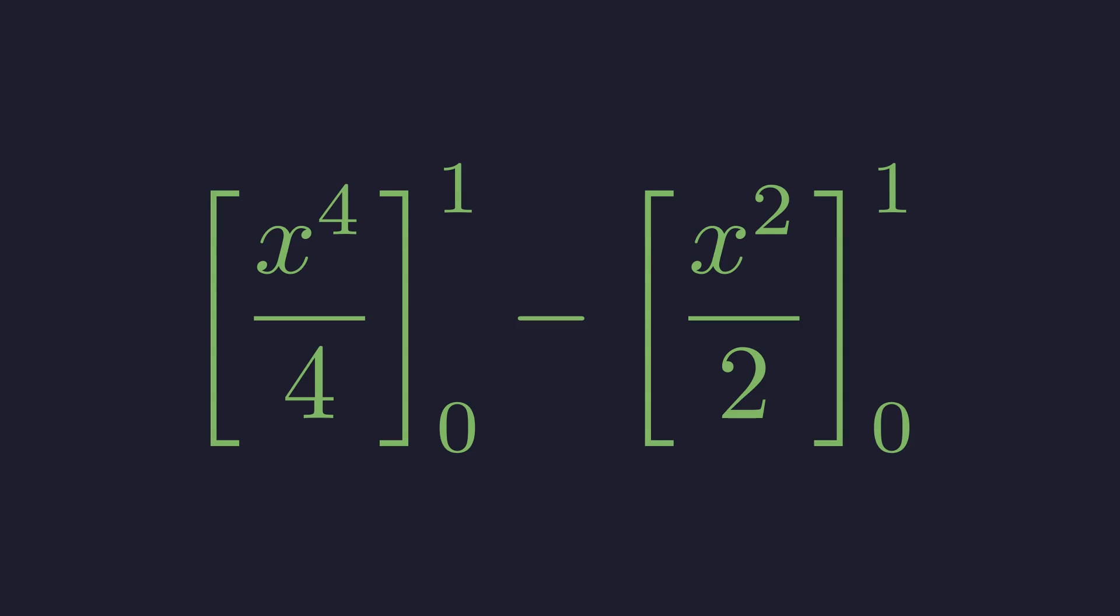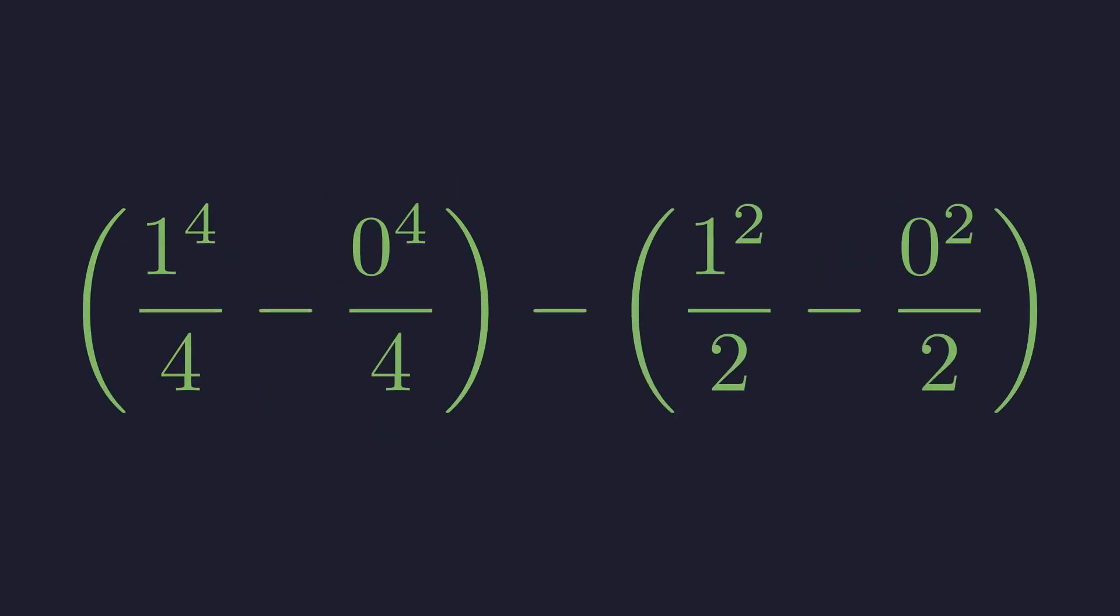We evaluate both from 0 to 1, plugging in the bounds. At 1 we get 1 over 4. At 0 we get 0. Same pattern for the second term: 1 half minus 0. So we have 1 fourth minus 1 half, which gives negative 1 fourth. We'll hold on to this.